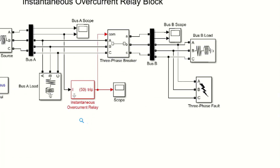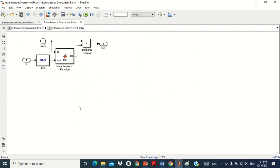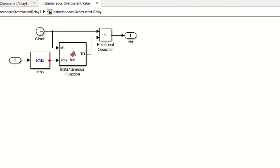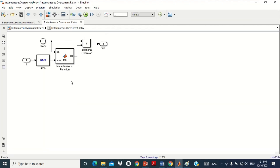Friends, if you notice, there is a down arrow indicating this block has another subsystem inside it. Click on this down arrow. You can see it has opened another page consisting of an RMS block, a MATLAB function for instantaneous overcurrent relay, a relational operator, and a clock. The system remains the same for all types of models — you may use this model as it is for any type of system and keep these settings as is for best results.